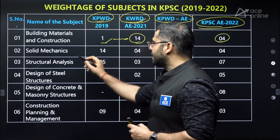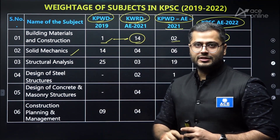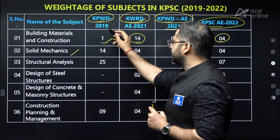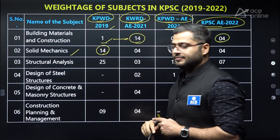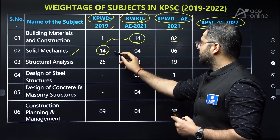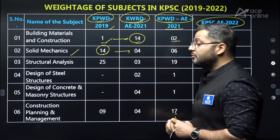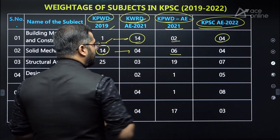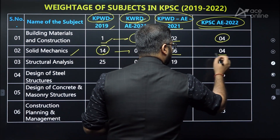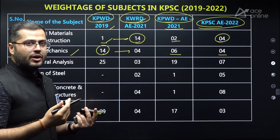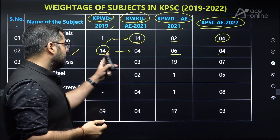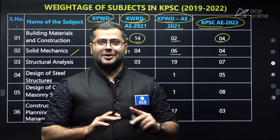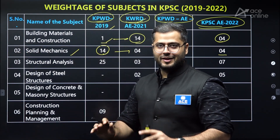Solid mechanics is again a very important subject. Out of 100 questions in 2019, 14 questions were asked. But this number dropped to four questions in the KWRD examination and six questions in KPWD and KPSCA. Again, there is huge variation, so you cannot leave solid mechanics. Strength of materials is very, very important.